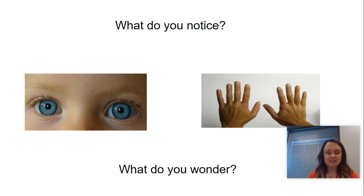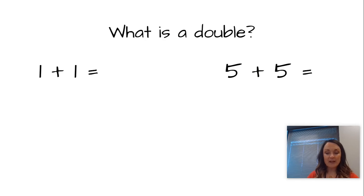These are actually something that we call doubles. What is a double? If you look here, I have a couple of number sentences. For example, one and one is a double because you're adding the same number two times.